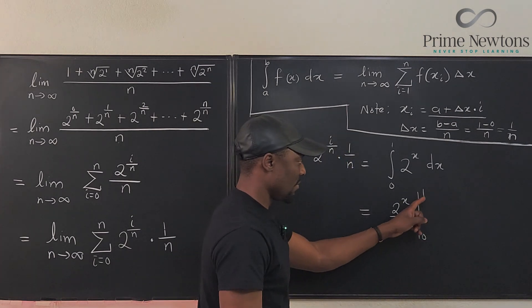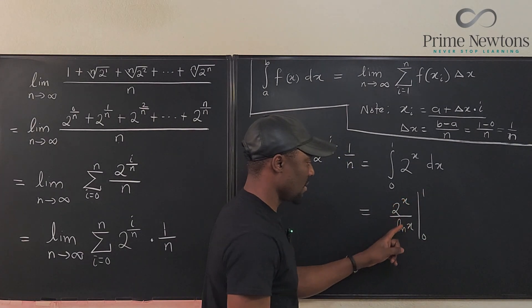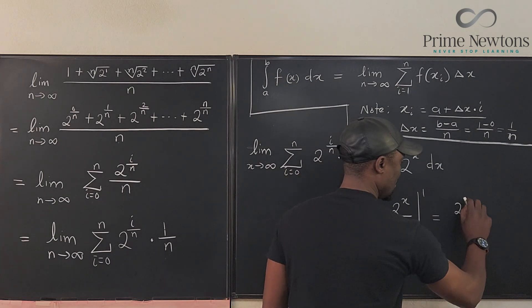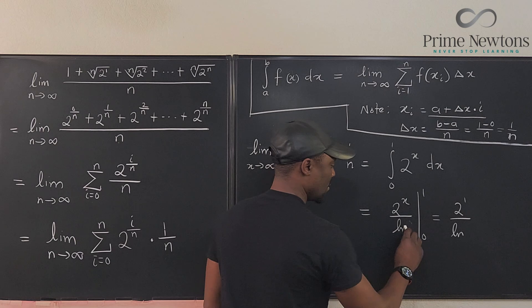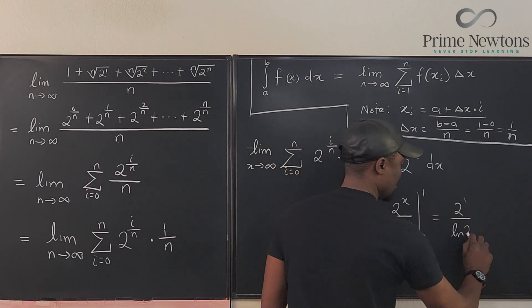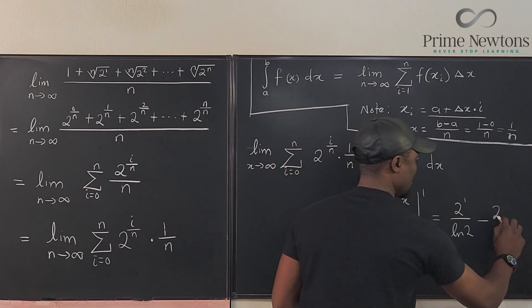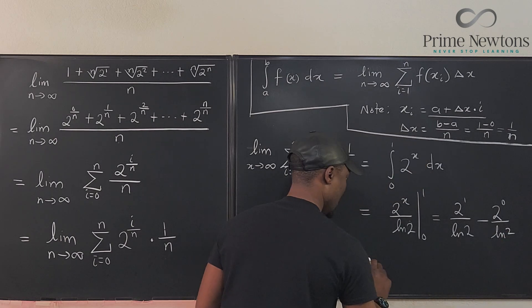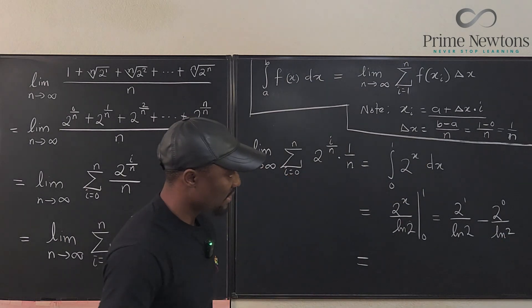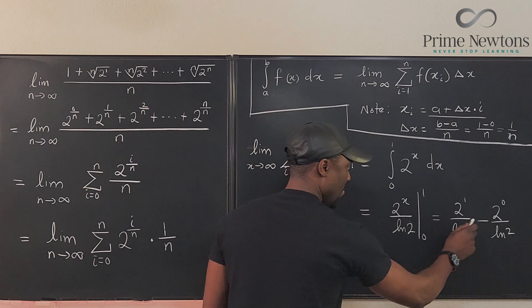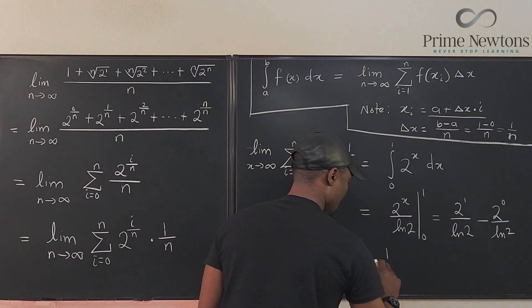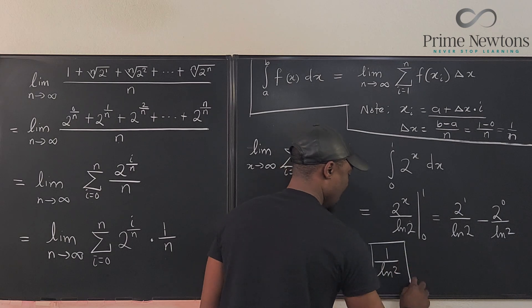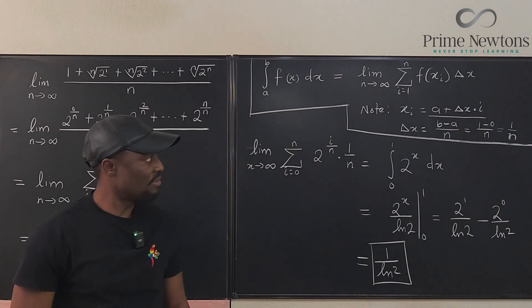If you plug in 1, you're going to get 2 to the 1. So this is going to be 2 to the 1 over ln 2, minus 2 to the 0 over ln 2. Well, looks like that's going to give us 2 minus 1, which is 1 over ln 2. And that is the answer to this limit problem.